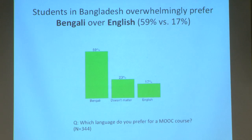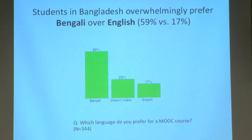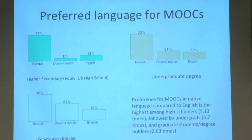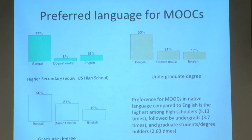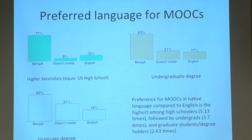Let me give you some numbers from studies we did recently. I asked students: if given the choice of learning through a Bengali language book versus an English language book, which would you prefer? Overall, 59% of students prefer a Bengali language MOOC versus only 17% who are fine with an English language MOOC. At the high school or school level, an overwhelmingly large number — 71% — prefer Bengali, over just 15% who are fine with English. As people get more education, say undergraduate or graduate degrees, their preference for Bengali falls slightly, but still remains above 50%, even for people who know English and have graduate degrees.